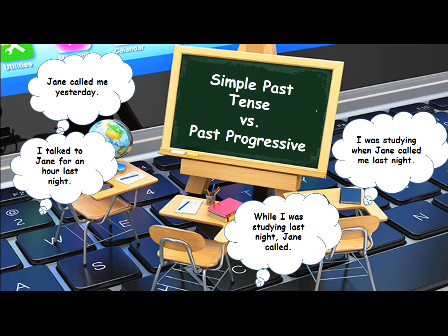Let's look at these examples. I was studying when Jane called me last night. Here, in this case, was studying — as you can see, we have the verb to be, was, and we have the action plus -ing form. So this shows you that they used the progressive tense. This is the past progressive. Two actions were happening at the same time, in progress at the same time. I was studying when she called last night.